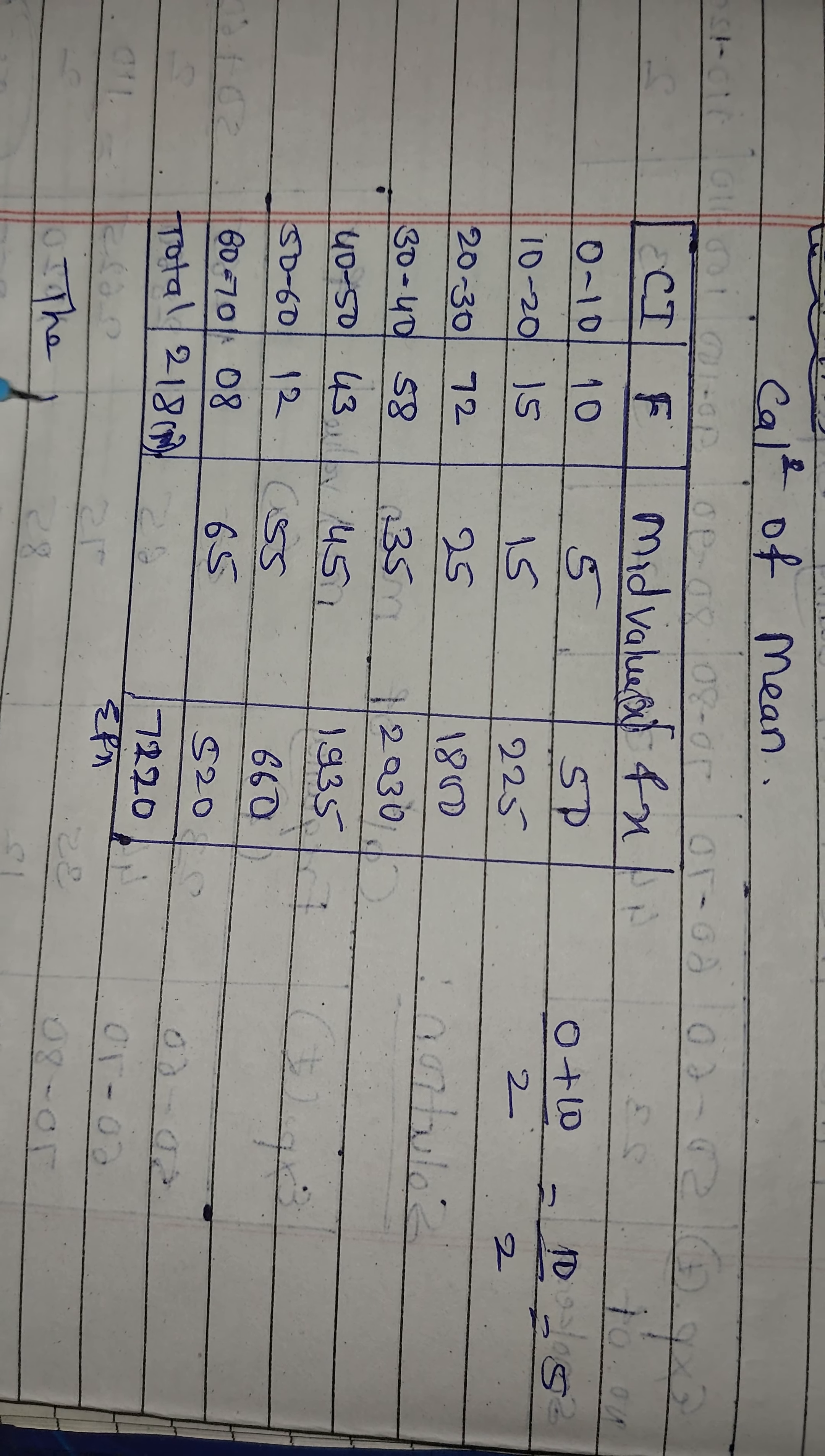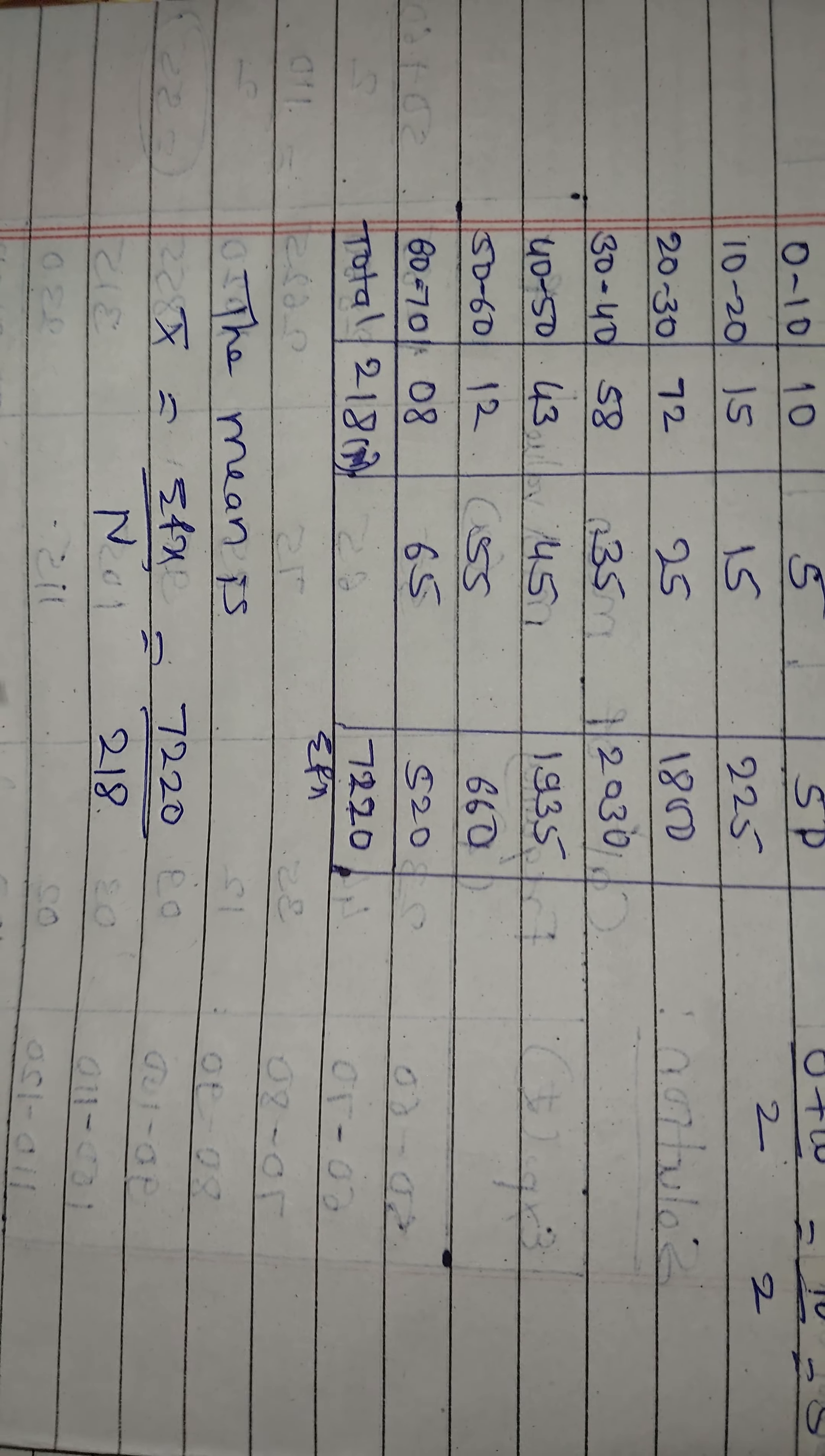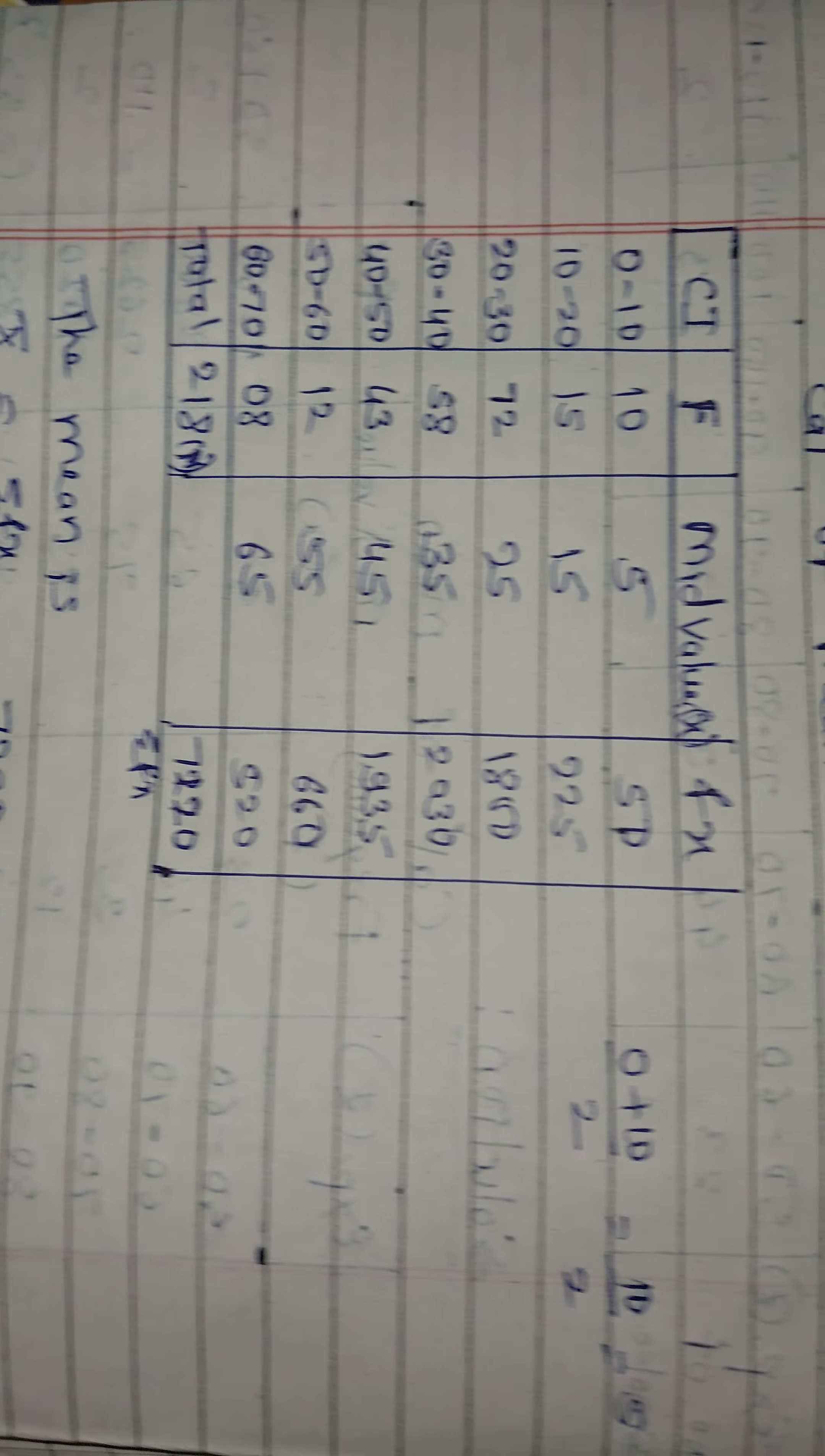Now the mean. The mean formula for continuous series is x̄ = ΣFX / N. Summation FX is 7220 divided by N, which is 218. So 7220 divided by 218, here we get 33.033. That's our mean, x̄.